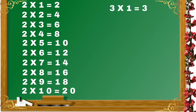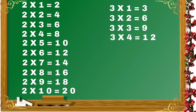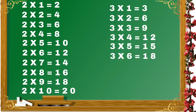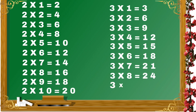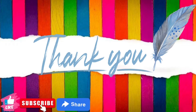3 1's are 3. 3 2's are 6. 3 3's are 9. 3 4's are 12. 3 5's are 15. 3 6's are 18. 3 7's are 21. 3 8's are 24. 3 9's are 27. 3 10's are 30.